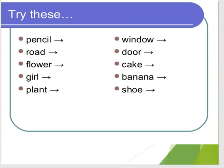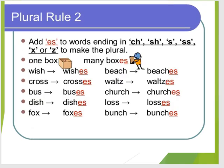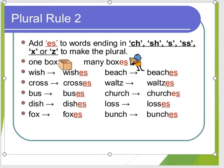And if a noun ends in CH, SH, S, SS, X, or Z, and O, we add not S but ES. For example, one box but many boxes.